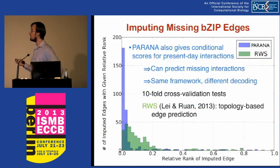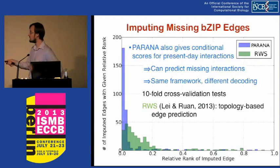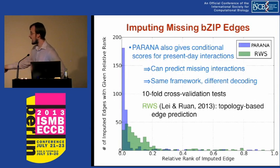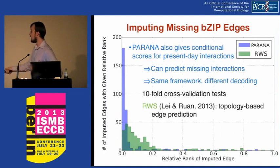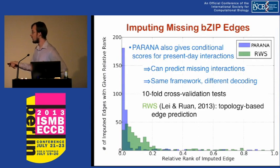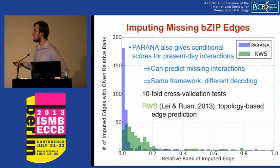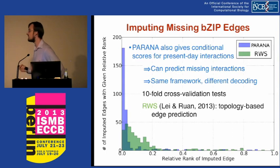We can also look at imputing missing edges using the same dataset. We performed tenfold cross-validation, removing edges we know exist and predicting their relative rank — zero meaning the true edge was predicted first, one meaning it was predicted last, so we want the distribution skewed toward zero. Comparing to a topology-based approach recently published for edge prediction, we do fairly well: most of the time, the edges we're predicting are the ones actually left out in cross-validation.